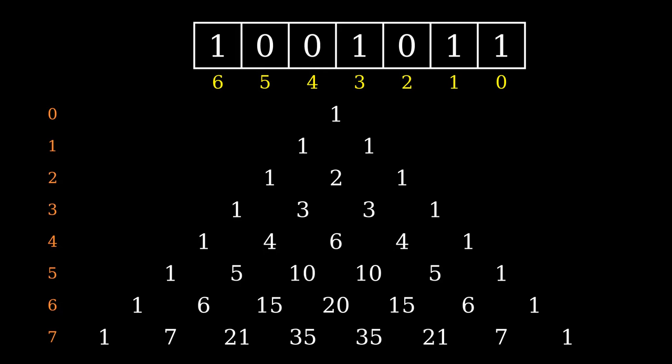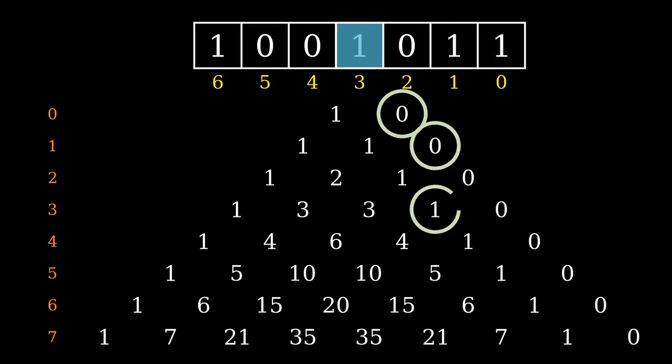Note that for some binary encodings, the formula can end up evaluating terms outside of the classic Pascal's triangle. This is easily resolved by extending an extra column of zeros beyond the rightmost numbers.